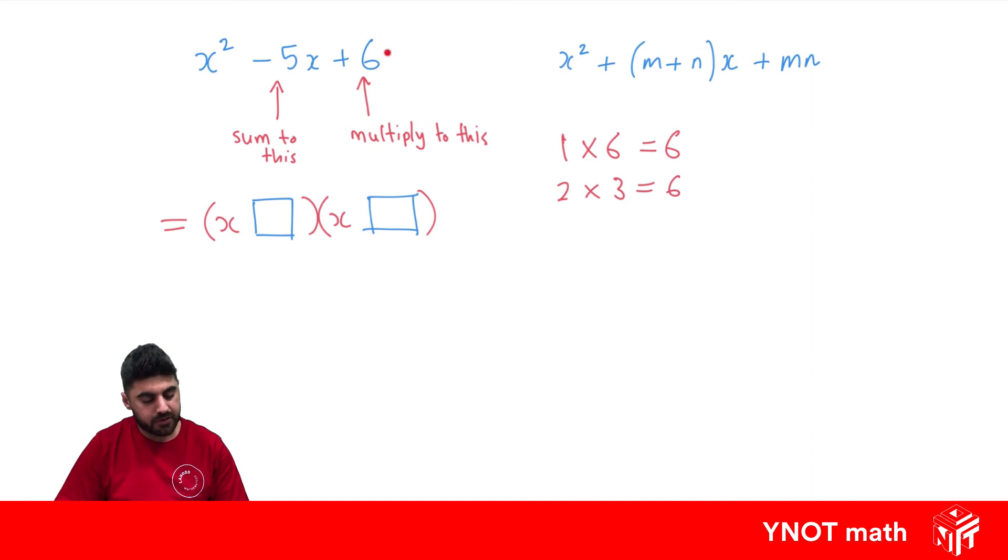The thing we're multiplying to is positive, but the thing we're adding up to is negative. If we're multiplying to get to a positive number, both numbers have to be positive or both have to be negative. But since this is negative, they both have to be negative.